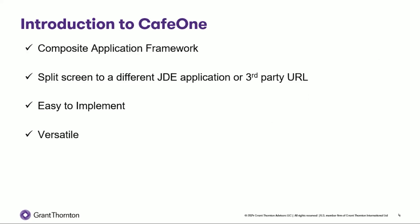Before we get to the demo, I'd like to introduce you all to Cafe Ones. So, what is a Cafe One? The easiest way to think about it is it's a split screen between different JDE applications and forms, or a JDE application and an external website. They're easy to implement — it'll take less than five minutes, as you'll see when we do our demo — and they're versatile. You can use them on just about any JDE application.